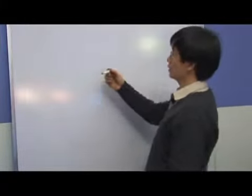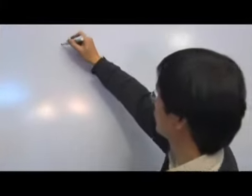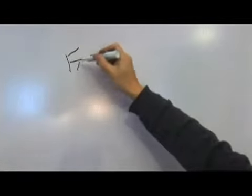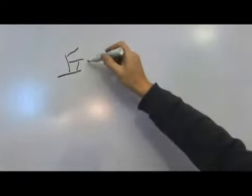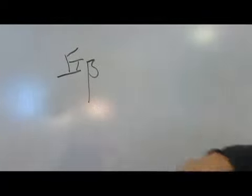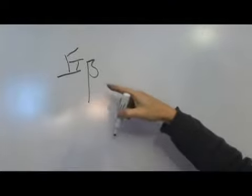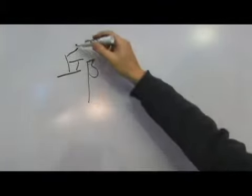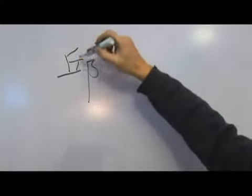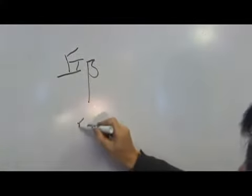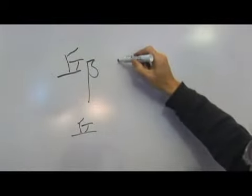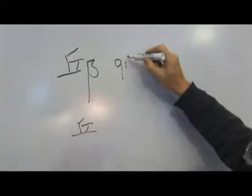The next character is Qiu. In Chinese, a character can be formed with a component that takes on the meaning and a component that takes on the sound or pronunciation. Here, Qiu — this character Qiu gives the sound for this word Qiu.